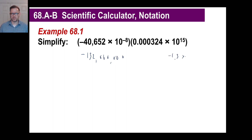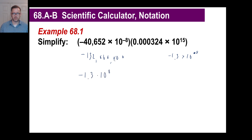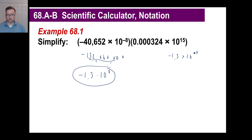Our answer comes out to about 132 million — negative, of course. We said our estimate was negative 1.3 times 10 to the 8th power. Looking at the result, we have negative 1.3 times 10 to the — counting the places — 1, 2, 3, 4, 5, 6, 7, 8 — there it is. That's our approximate answer.